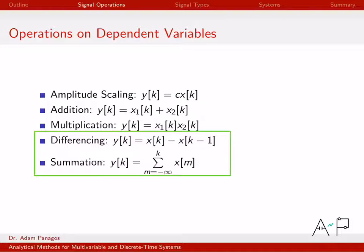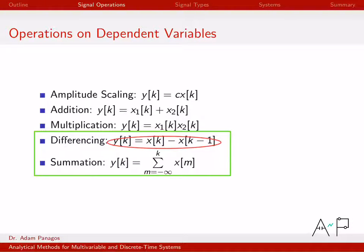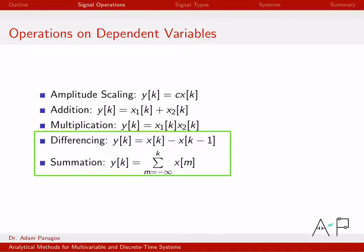The next two signal operations we'll look at are differencing and summation. We'll create signals by taking the difference of time-adjacent samples and summation. If you think of it in terms of continuous time signals, these are analogous to taking the derivative and integral of a signal. But since we're working with discrete time signals, we call them differencing and summation, though they are very much akin to differentiation and integration of continuous time signals.